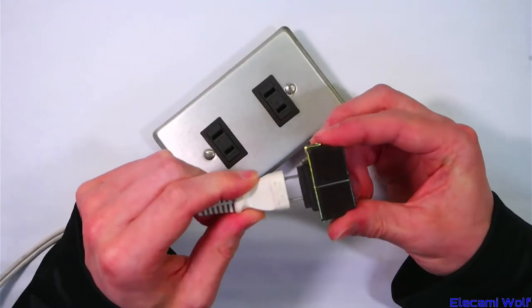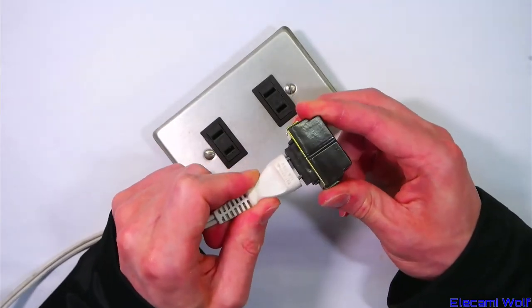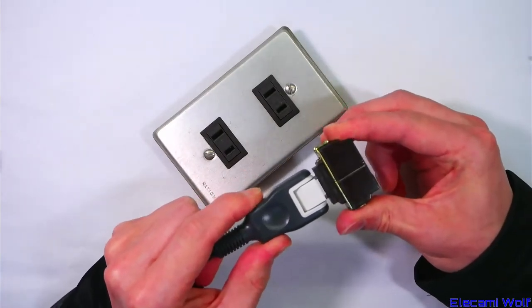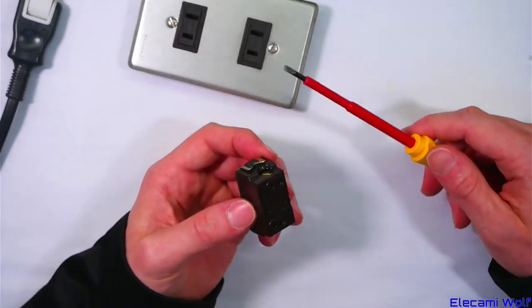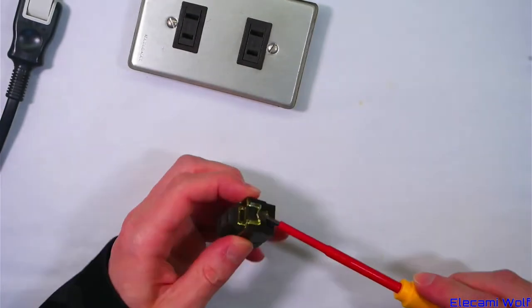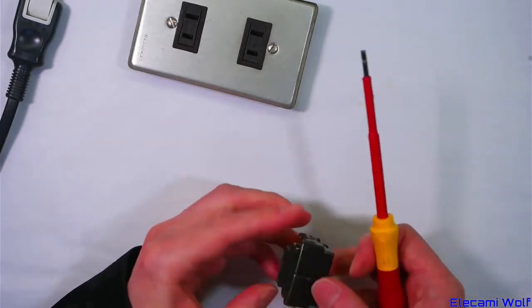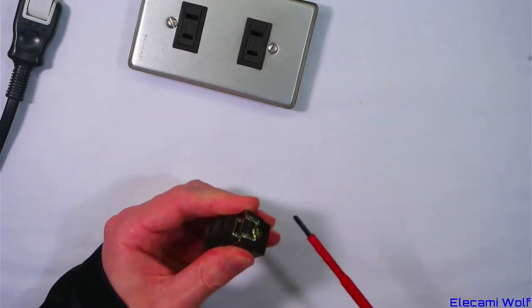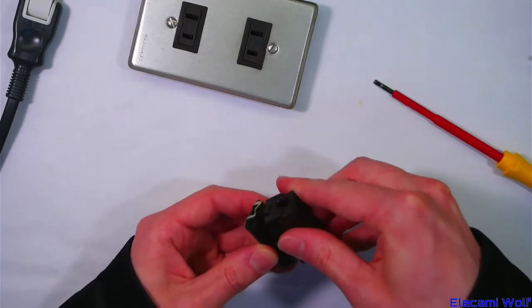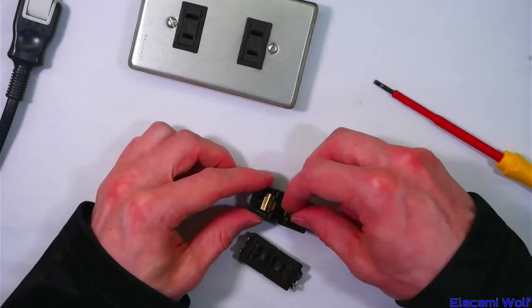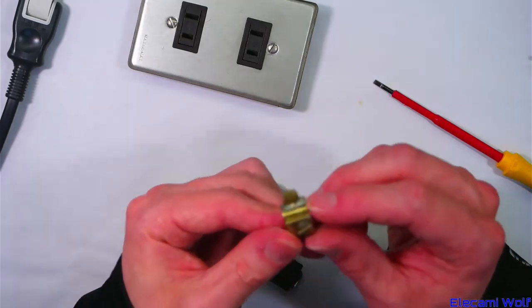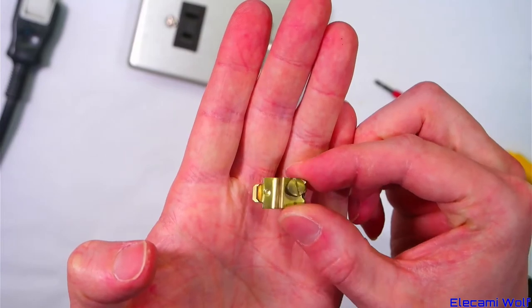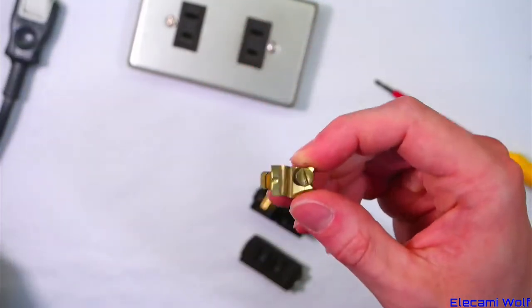So let's take it apart and see how the contacts are constructed. You can see there is a bump on the contact on one side and that will lock into the holes on the plug.